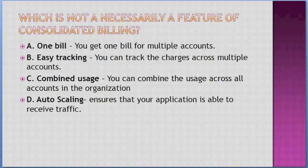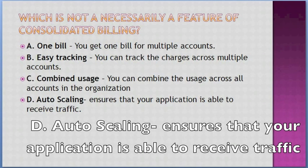Which is not necessarily a feature of consolidated billing? Options: A. One bill — you get one bill for multiple accounts, B. Easy tracking across multiple accounts, C. Combine usage across all accounts in the organization, D. Auto scaling ensures that your application is able to receive traffic. Answer: D — auto scaling ensures that your application is able to receive traffic.